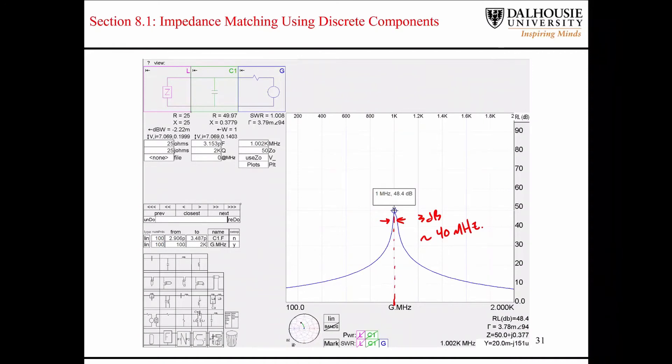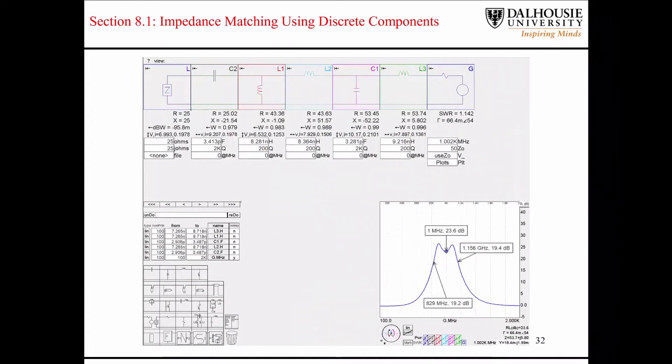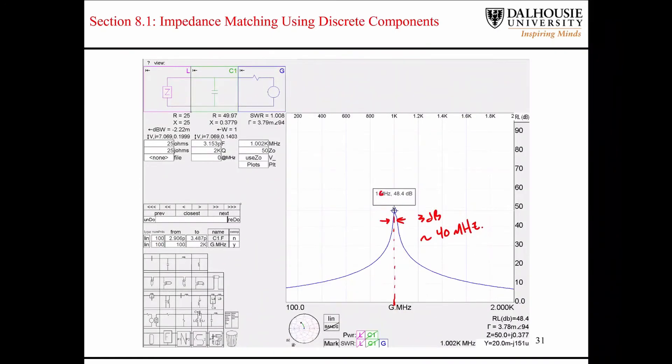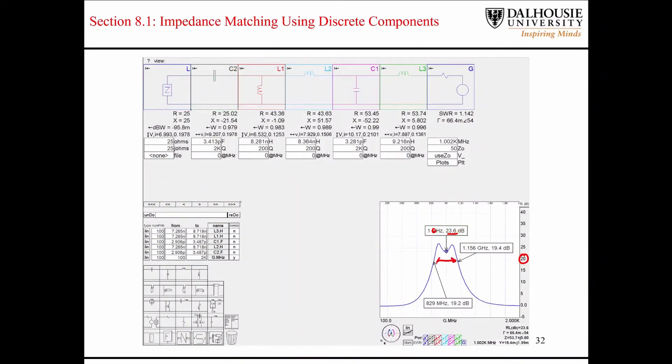If our goal was to design a broadband matching network, then the way that we would accomplish that is by adding more components. You can see here, I've added five components. I was able to achieve a good return loss of greater than 20 dB. In fact, we're near 24 dB at our center frequency of 1 GHz. And you can see that our 3 dB bandwidth here in this case is around 340 MHz.